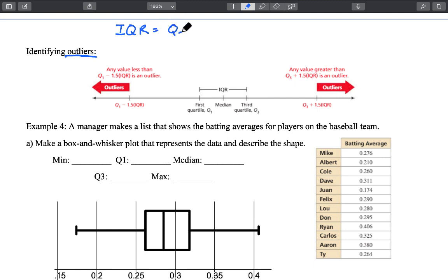Remember that is Q3 minus Q1. Then we are going to take one and a half times that value. So we're going to say one and a half times the IQR.